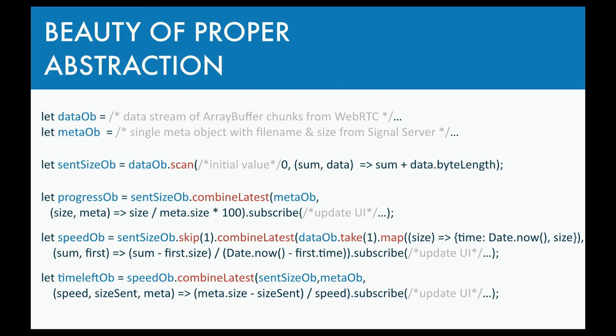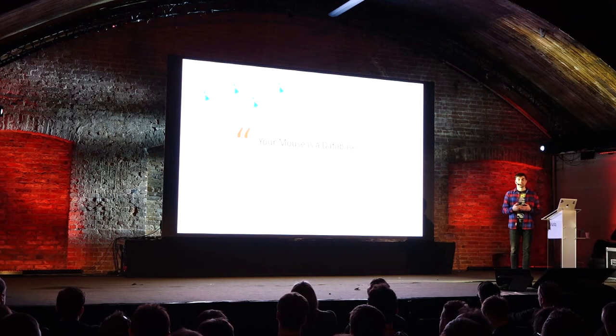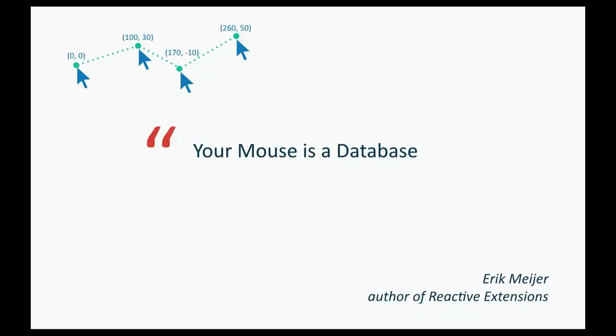Observables aren't only for streams of data — everything that changes over time can be represented with observables. For example, if you think about mouse cursor position as an observable and combine it with itself shifted in time, you can easily implement things like gesture handling, dragging, or drag and drop. It's a super powerful technique.